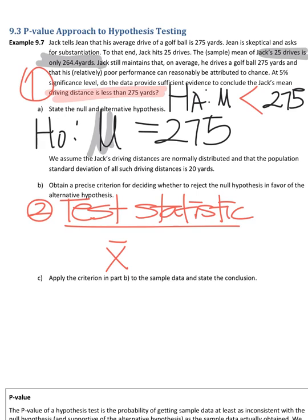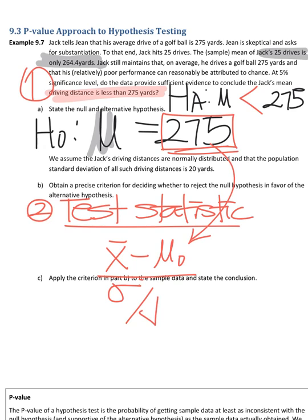264.4. We are going to plug the sample means later. Minus the μ₀. Have you ever seen the symbol μ₀? It's not just μ, but μ₀. Before, I stated μ is equal to μ₀, right? So 275 would be the μ₀. Divided by σ over square root of n. Just a second.